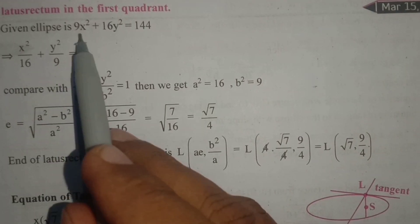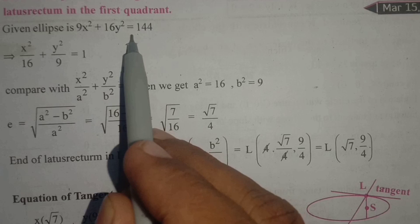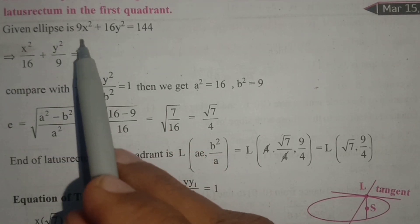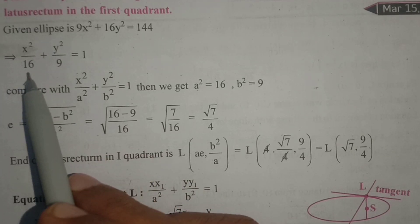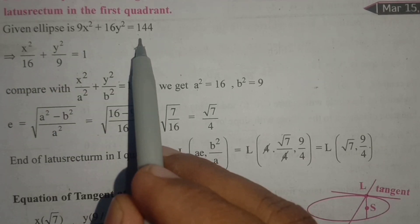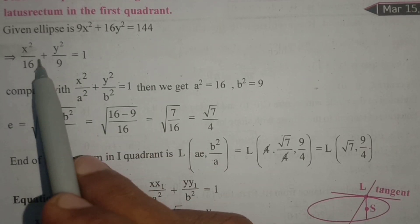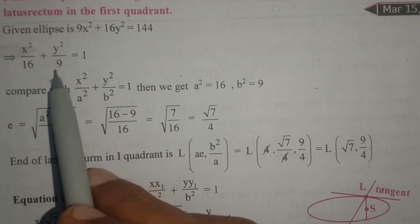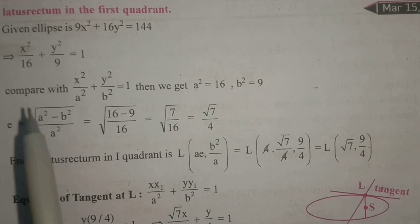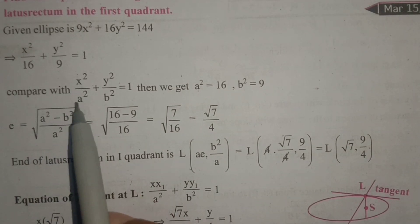The equation is 9x² plus 16y² equals 144. Dividing throughout by 144: 144 divided by 9 gives 16, 144 divided by 16 gives 9, and 144 divided by 144 gives 1. So the expression becomes x²/16 plus y²/9 equals 1.